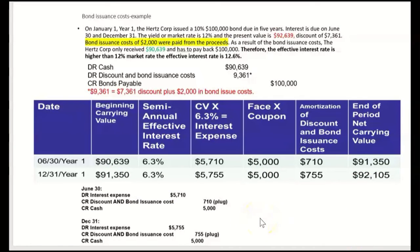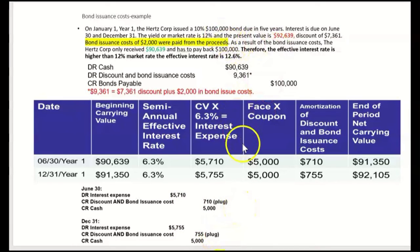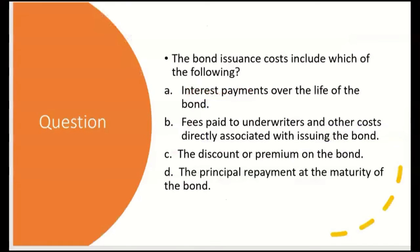Notice that whenever bonds are sold at a discount, interest expense is greater than cash paid. Also notice that interest expense for December was even higher than for June — because we keep increasing the carrying amount as we get closer to the face value of $100,000. Under the effective interest method, interest expense is based on the carrying amount, so as the carrying amount goes up, interest expense goes up.